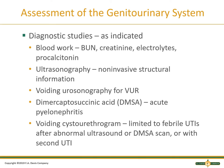Blood work includes BUN and creatinine for renal function, electrolytes — sodium, potassium, calcium — and procalcitonin. An ultrasound is non-invasive and can visualize structures in the testicles and GU system. Voiding patterns can be assessed with VUR urosonography. The DMSA looks for acute pyelonephritis, and the cystourethrogram is used if the DMSA or ultrasound is abnormal, or if there has been a recurrence of urinary tract infections.